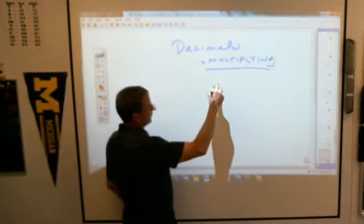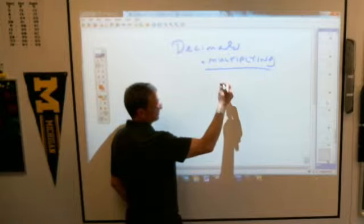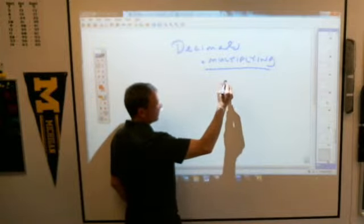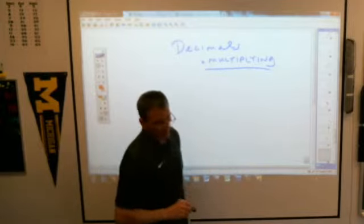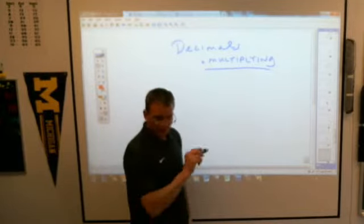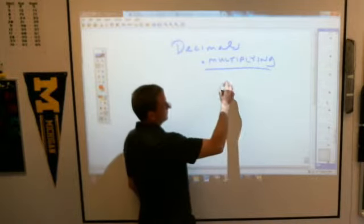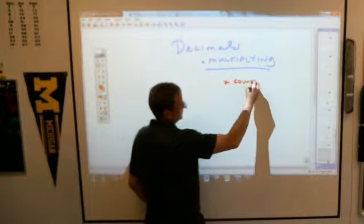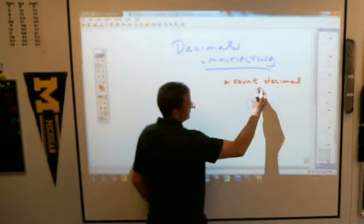Remember the rule for multiplying decimals is to? Line. Oh boy, now we're already in trouble. Line them up, right? No. Thank you. It is not lining them up. Matter of fact, I'm pretty sure I told you not, in big letters, you do not have to line them up. The rule is to count the decimal places. Count the decimal places.